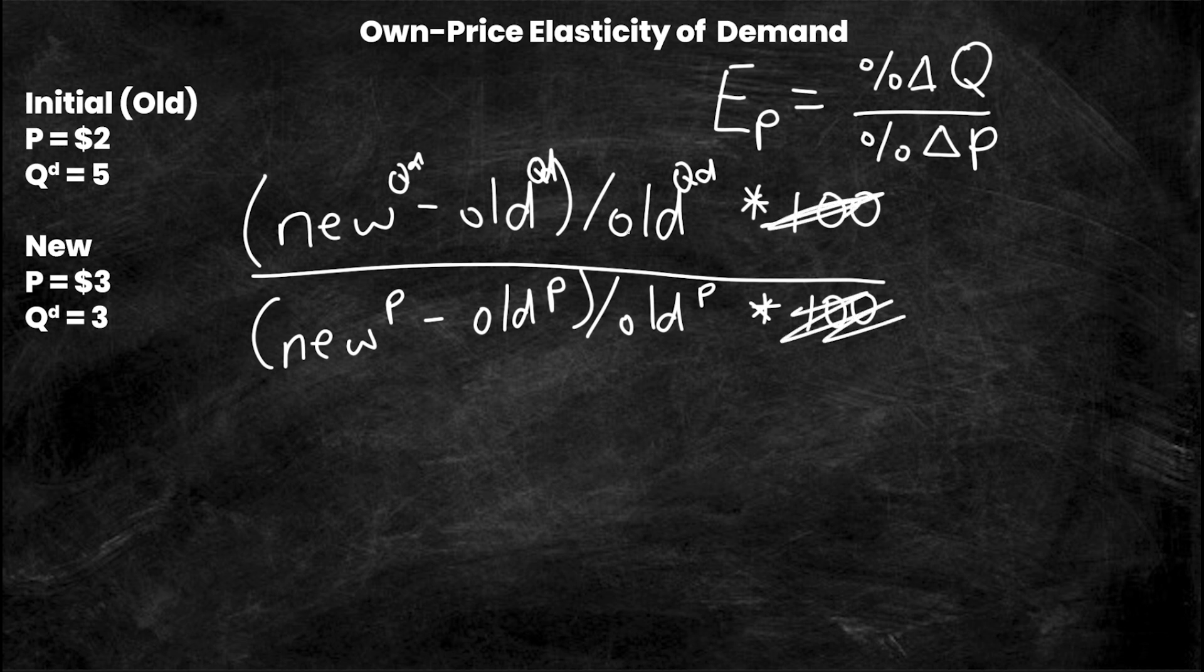Now I just need to sub in my values. The new quantity demanded is 3, so I'm going to have 3 minus the old quantity demanded which is 5, divided by the old quantity demanded which is 5. Now let's do the denominator. My new P is 3 and my old P is 2, divided by my old P which is 2. So again, new minus old over old.